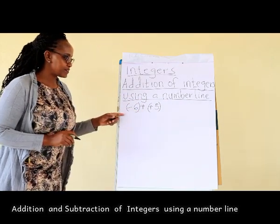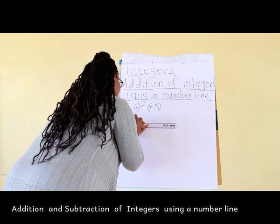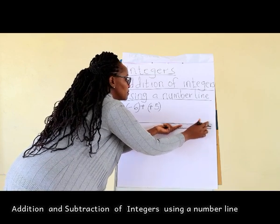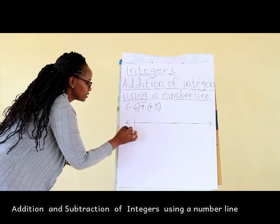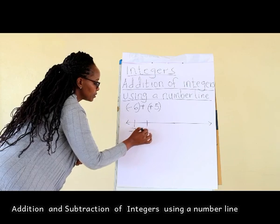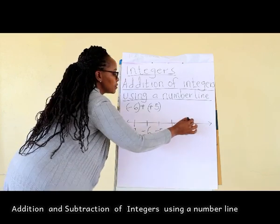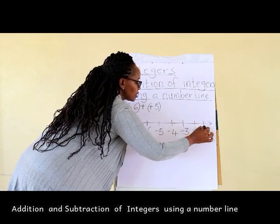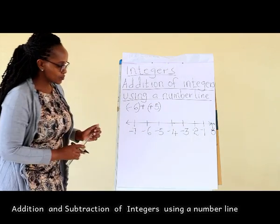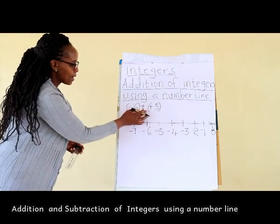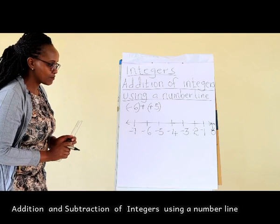So we have negative 6 plus positive 5. Let's draw a number line to include negative 7 and 0. We have our number line which includes negative 7 and 0. To add a positive integer, we move 5 steps to the right.